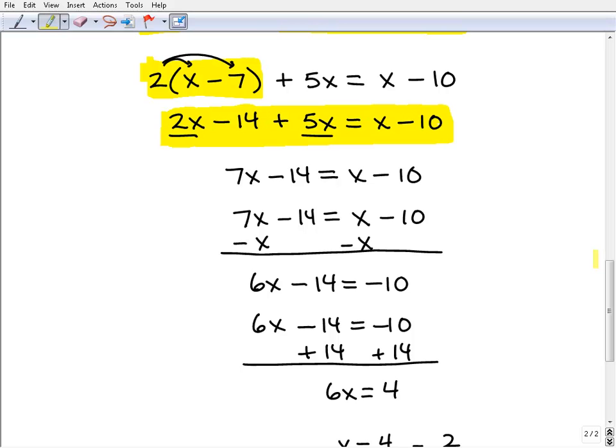Now the next step is going to be to clean up both sides of the equation by combining like terms. So in this case we have a 2x and a 5x, we can write that as a 7x.